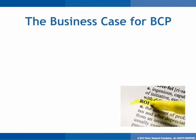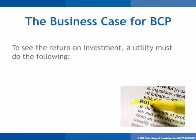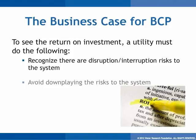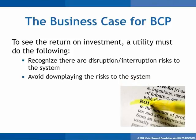"That will never happen here" — we've all heard that before. That mentality is often the biggest hurdle to investing in business continuity planning. Before a utility can entertain the idea of BCP and see the return on investment, they must first recognize that there are disruption and interruption risks to the system, and they must avoid downplaying those risks. Once a group perceives that there is a need for a BCP, the utility can then demonstrate that the costs of developing and maintaining a business continuity plan pale in comparison to the cost of a major disruption, or to the cost of many minor disruptions over time.